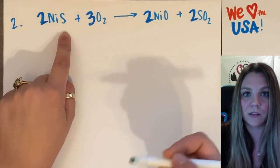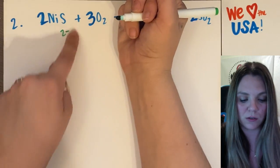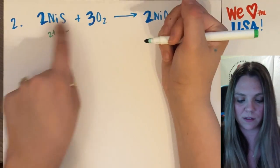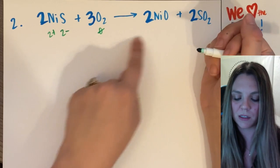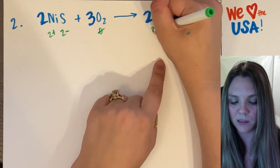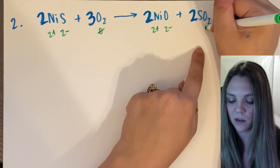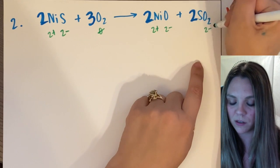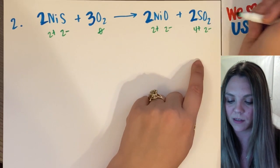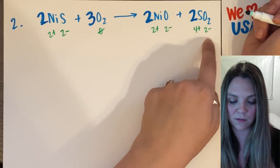Sulfur, as sulfide, has a two minus charge, which means nickel's going to have a two plus. Oxygen's elemental. Oxygen's two minus. Nickel's two plus. Oxygen's two minus. Sulfur is going to be a four plus, right, because there's two oxygens.